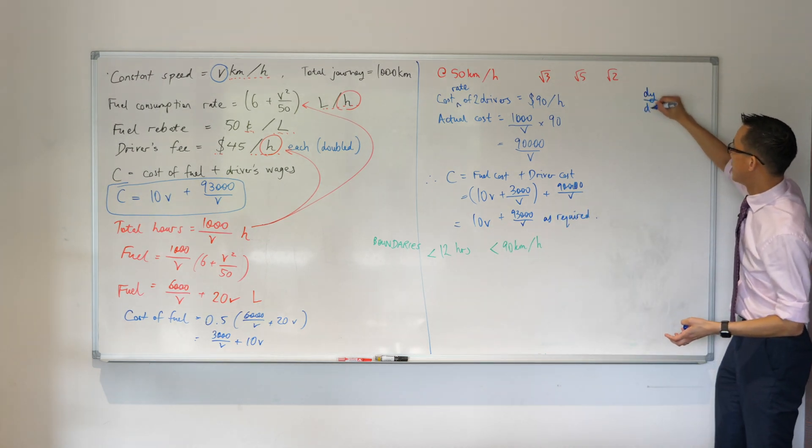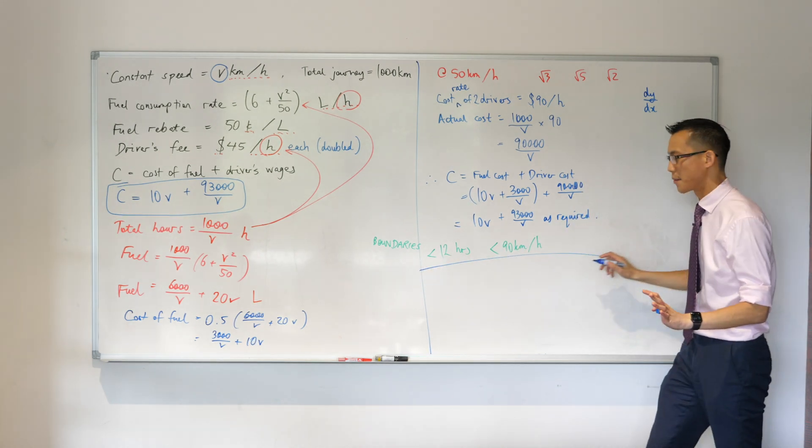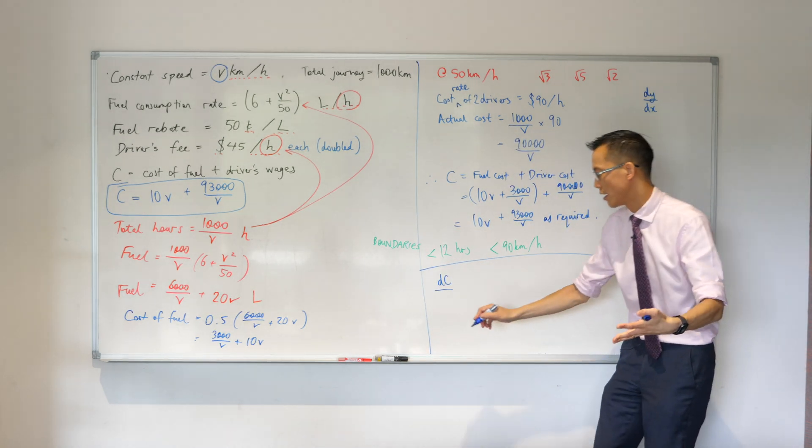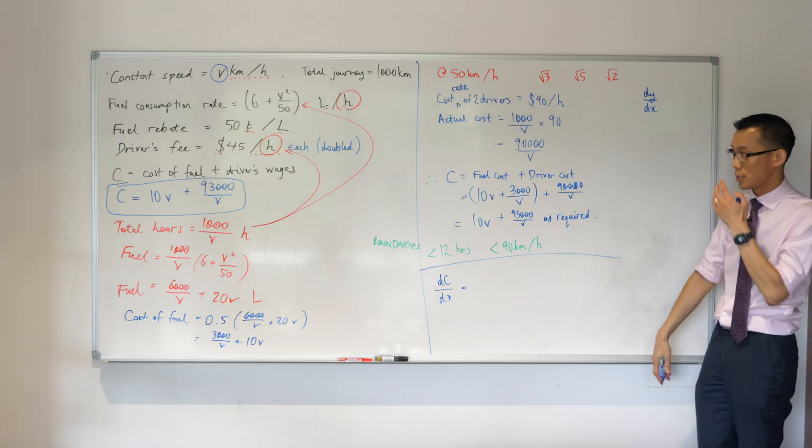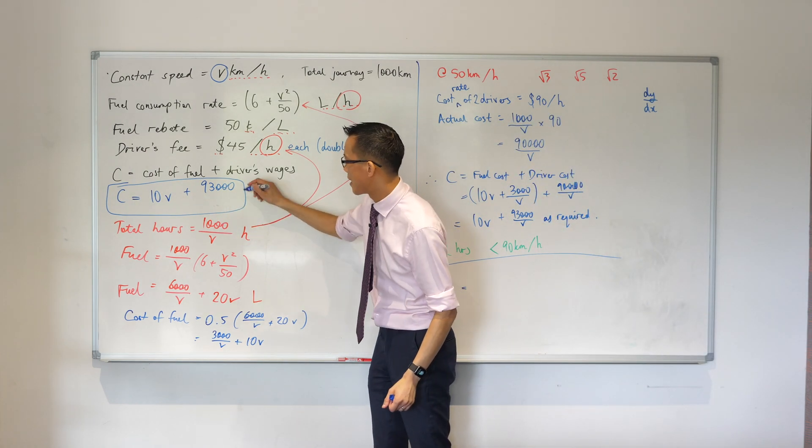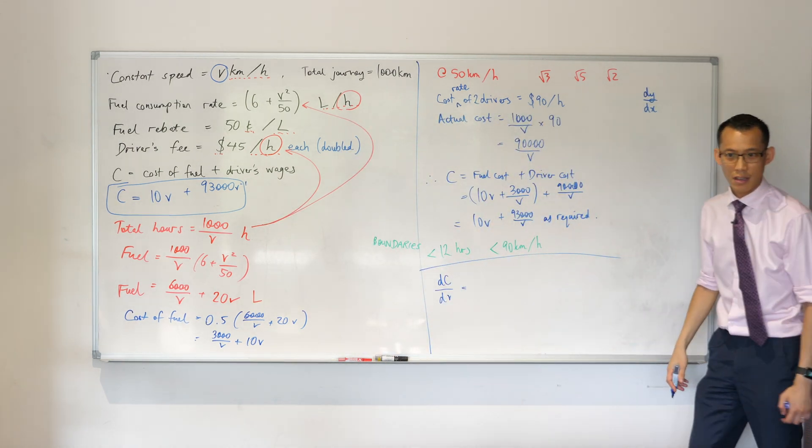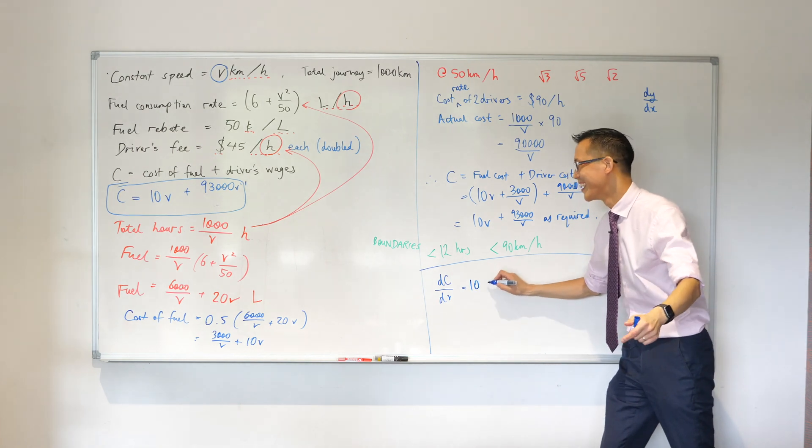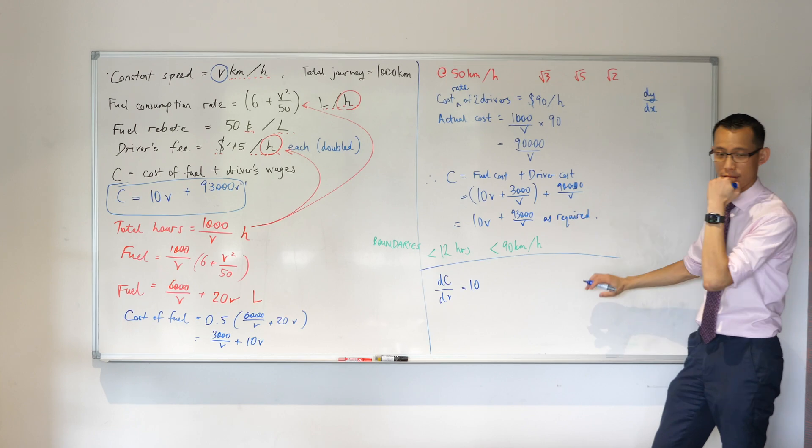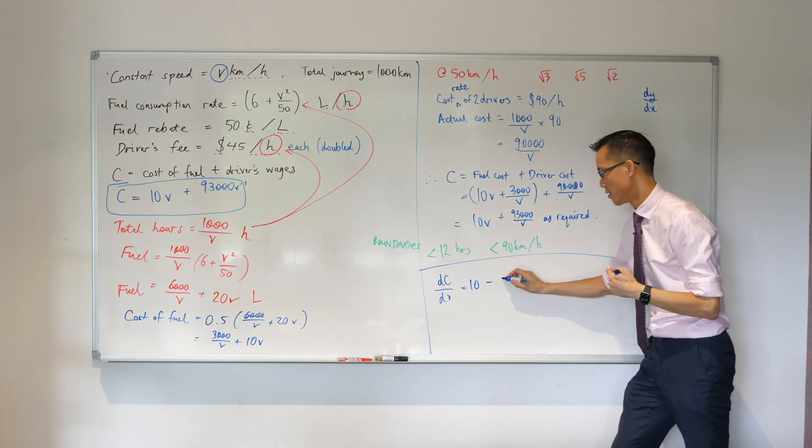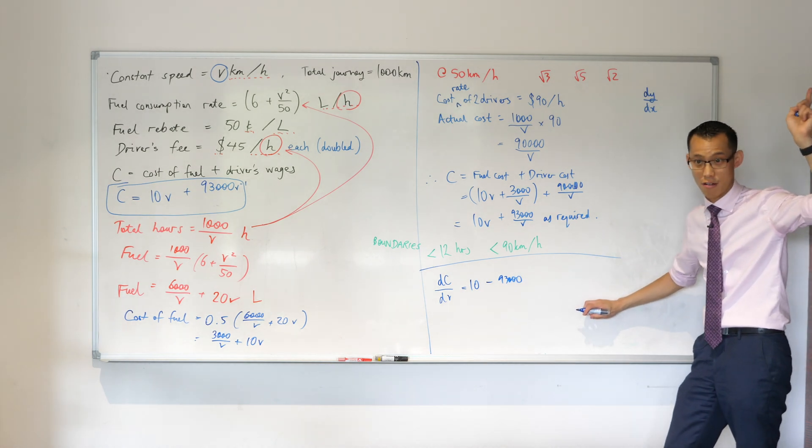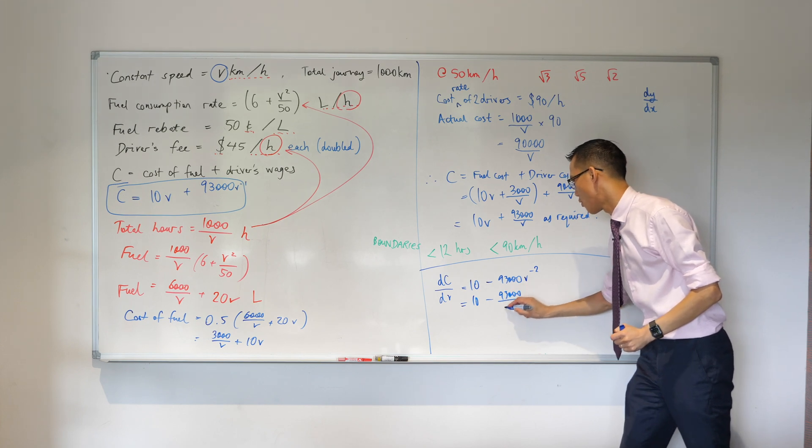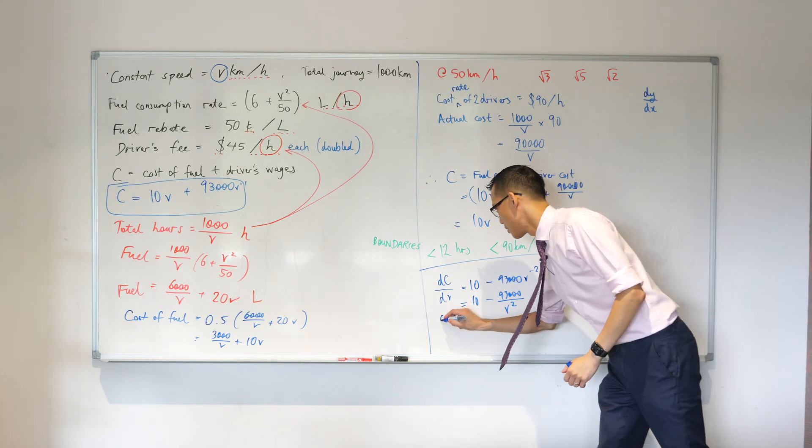Usually you guys are used to seeing dy on dx, but there are no y's and no x's to be found. So in fact, I'm going to be differentiating dC/dV. That's the function on the left, and I'm differentiating with respect to V. I will just sneakily take this and write it as V to the negative 1. Why? I can just use the power law when differentiating. 10V differentiate gives you 10. Then 93,000V to the negative 1, so minus 93,000, and that negative 1 becomes negative 2. So I've got 10 take away 93,000 on V squared. dC/dV.